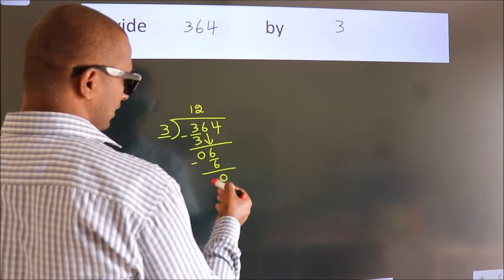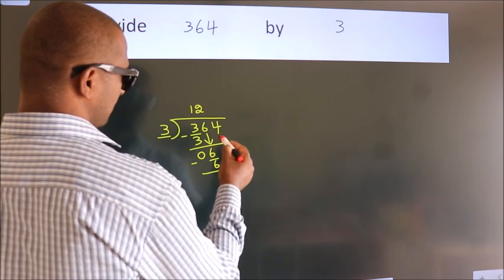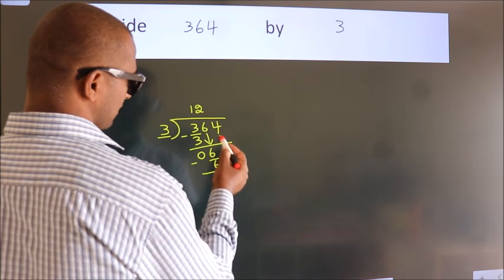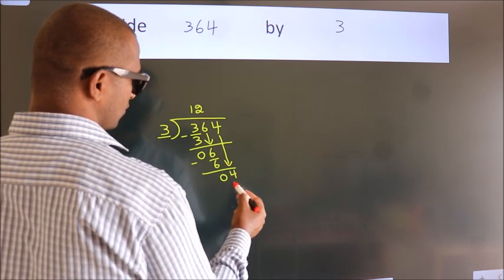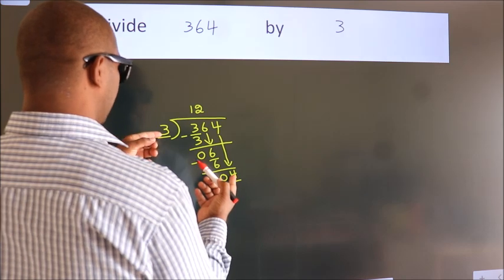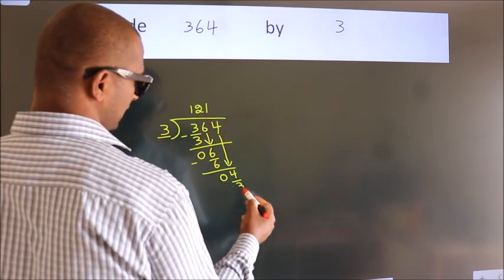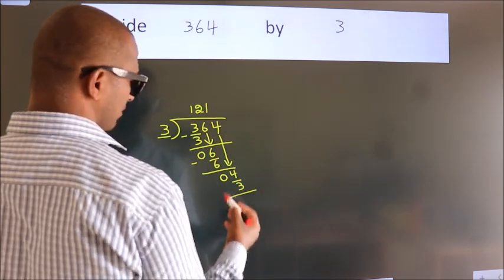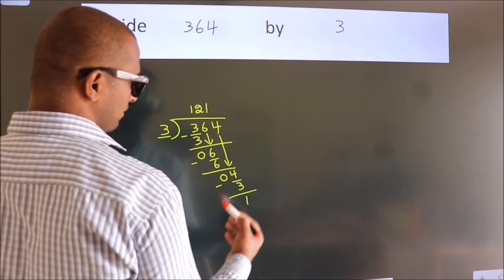We get 0. After this, bring down the next number. 4 down. A number close to 4 in the 3 table is 3 ones, 3. Now we subtract. We get 1.